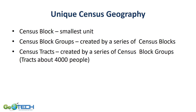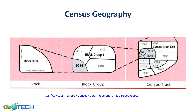The smallest unit is the census block. Grouping census blocks together gives you a census block group, and grouping block groups together gives you census tracts, which are about 4,000 people and usually follow political boundaries and roads. In the diagram shown, block 3014 fits into block group 3, which fits into census tract 5.02.